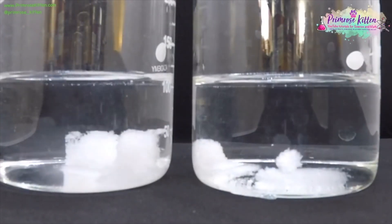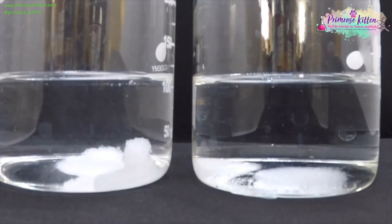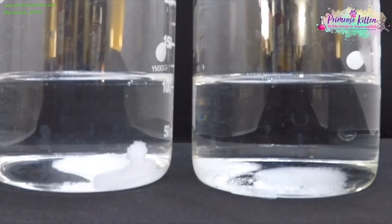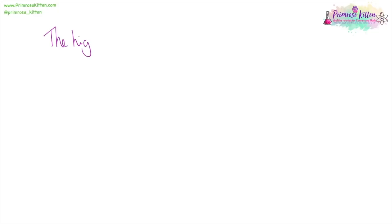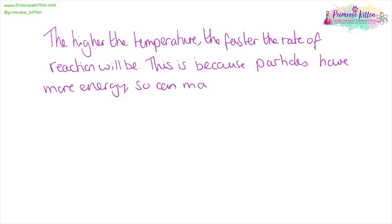Here I have put sugar cubes into hot water and cold water, and you can see the sugar cubes in hot water dissolved much, much faster than the sugar cubes in cold water. For the rate of reaction, we can say that the higher the temperature, the faster the rate of reaction will be. This is because the particles have more energy, so they can move around faster, and this will lead to more frequent, successful collisions.